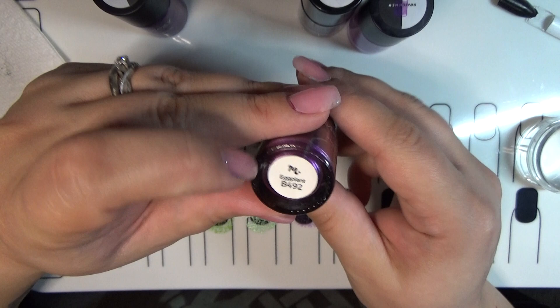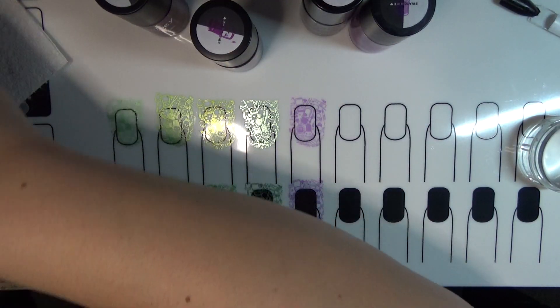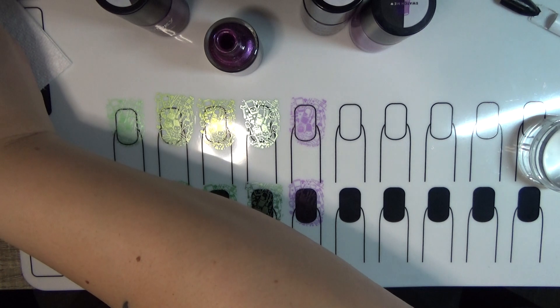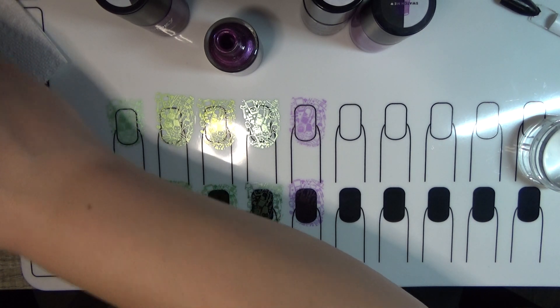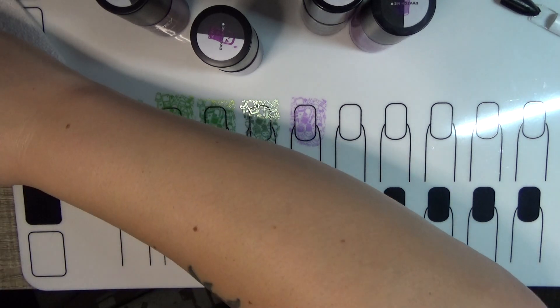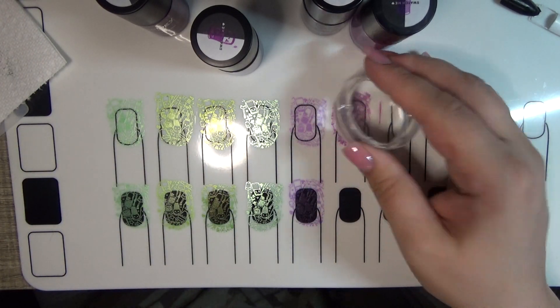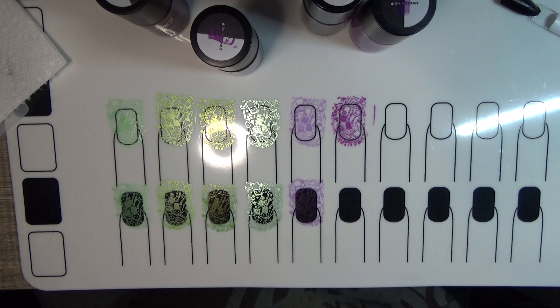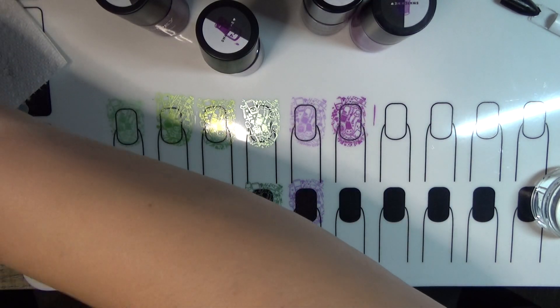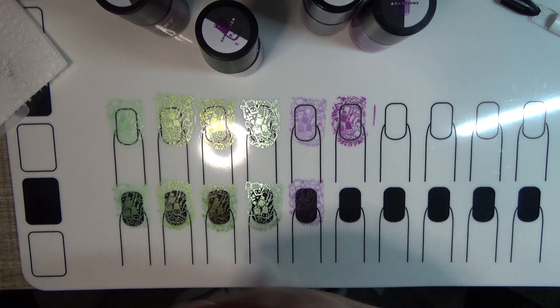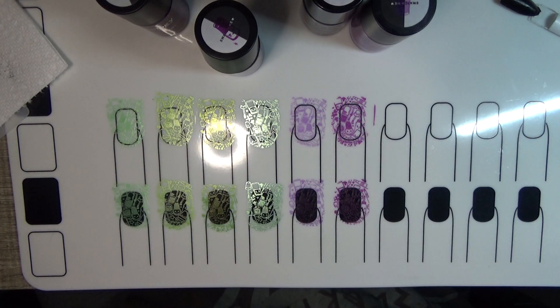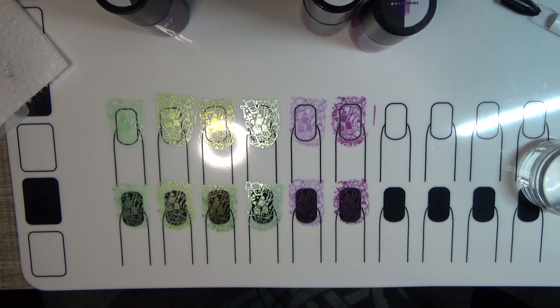We're going to go in with Eggplant B492. Clean the plate. I'm actually rather fond of Eggplant. It's a very pretty purple that they have made. Ooh, that's so pretty. We're going to stamp that on the white, and that is much more opaque than Foxglove. There's Eggplant next to Foxglove.